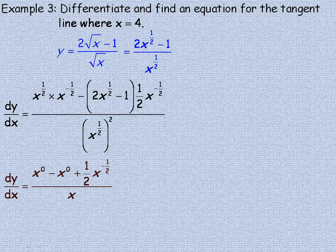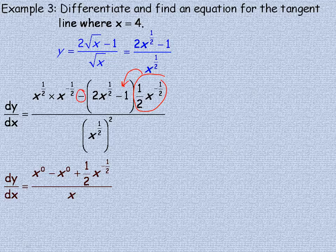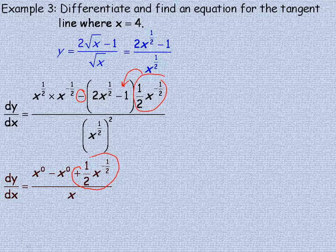Now the last term comes from expanding this, n multiplied by the negative 1, and of course this changes the sign again when you take the brackets off. So that's why it ends up being positive a half x to the negative a half.